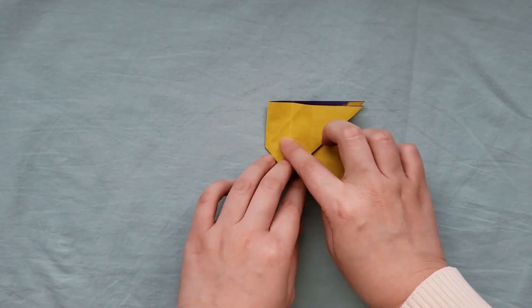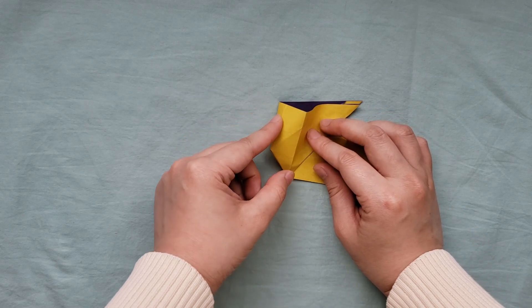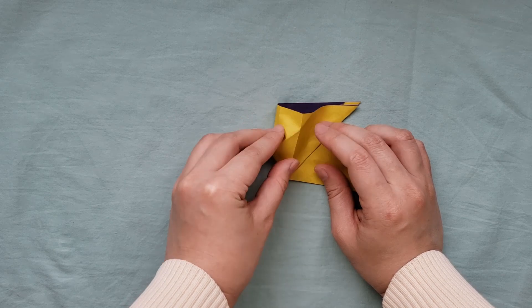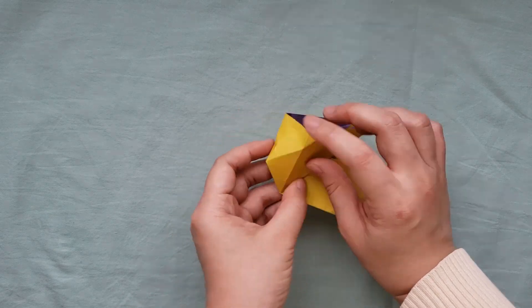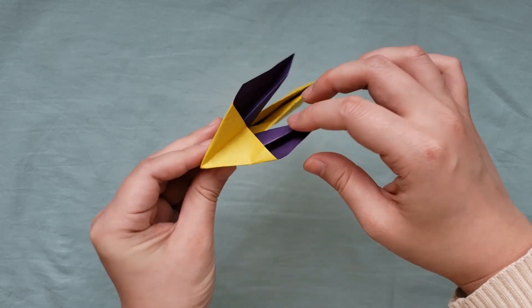On one side of the bunny's face, there should be a diagonal fold. Press in on the fold, making it the same on both sides. And tuck the fold between the ears.